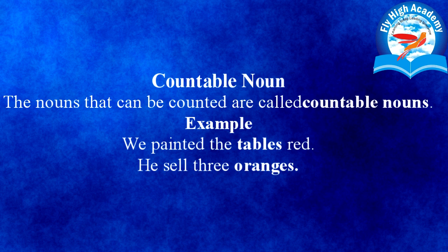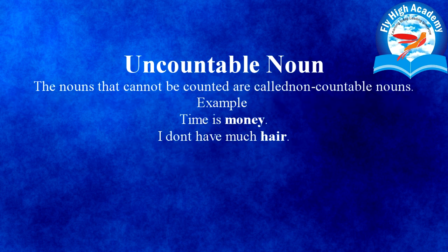Then countable noun. Countable noun वो noun होते हैं जिन्हें हम count कर सकते हैं। The nouns that can be counted are called countable nouns. For example, 'We painted the tables red' — tables आप count कर सकते हैं। 'He sells three oranges' — oranges को आप count कर सकते हैं। इसलिए यह countable noun कहलाते हैं।